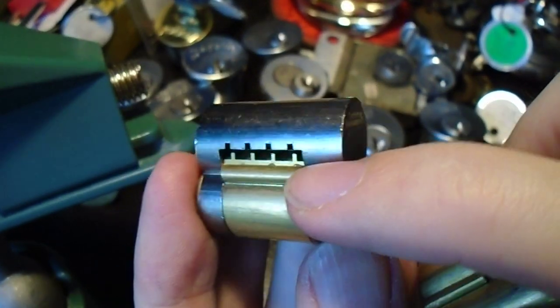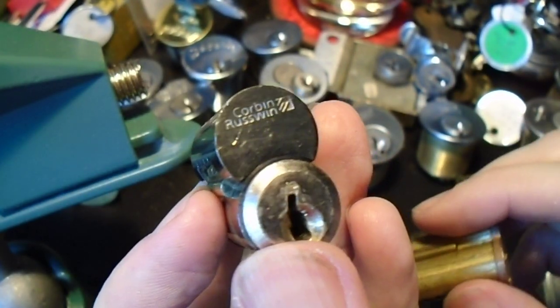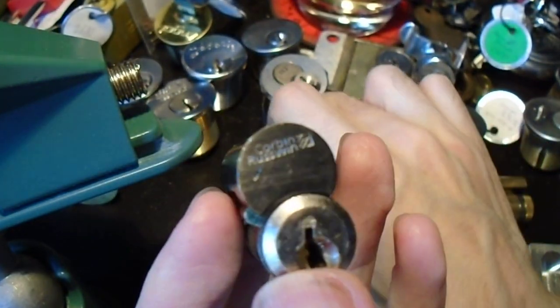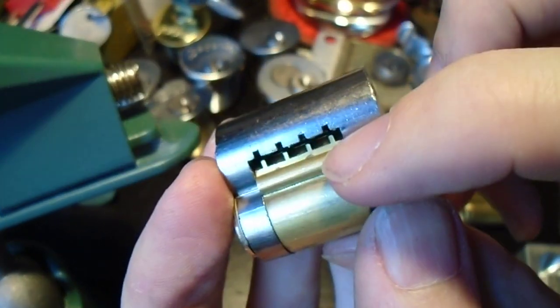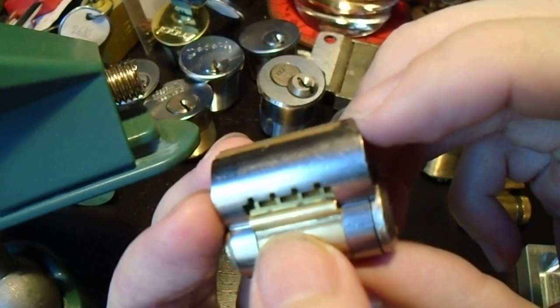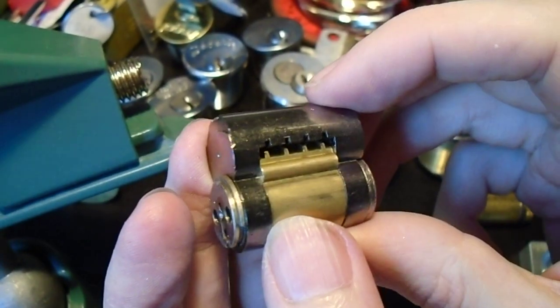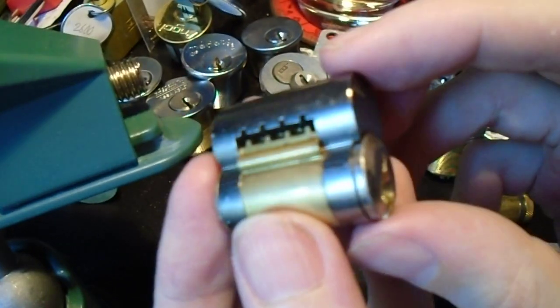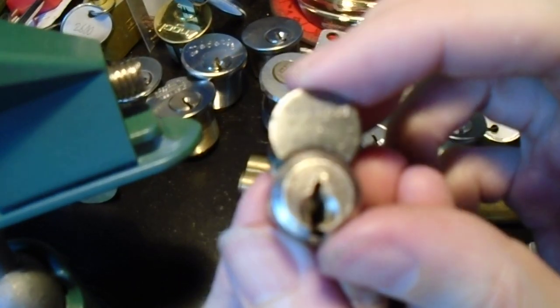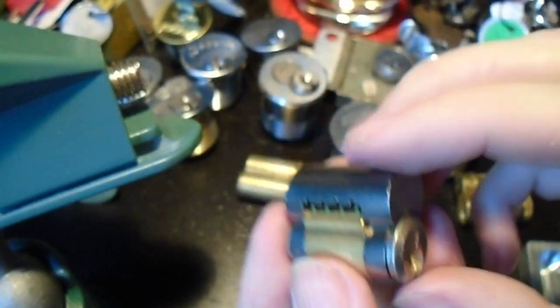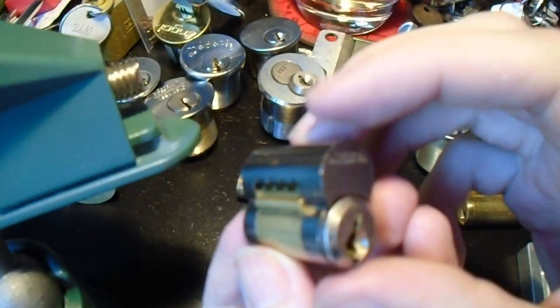But the basic operating principle is the same. The sleeve wraps around the plug and it has this little retaining lug that, if you get it to the separate shear line of the control sleeve, it can be rotated out of the way, which means that it requires a completely separate key from the operator key, or a lot of luck picking.